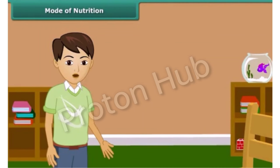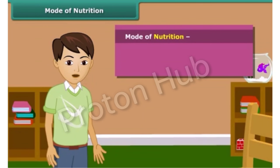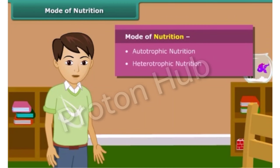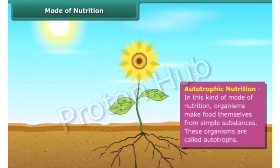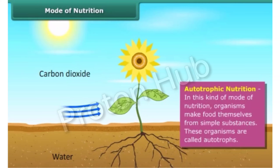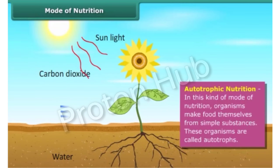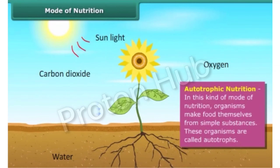Now let's know about the mode of nutrition. There are two types of nutrition modes: autotrophic nutrition and heterotrophic nutrition. The mode of nutrition in which organisms make food themselves from simple substances is called autotrophic nutrition, and these organisms are called autotrophs.